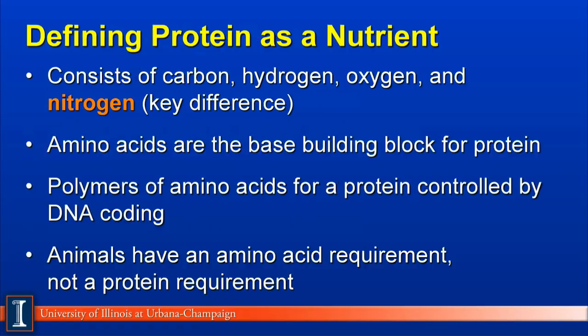Let's begin by defining what a protein is as a nutrient. It consists of carbon, hydrogen, oxygen, and nitrogen. Notice nitrogen is in very bold letters — nitrogen makes it different. Carbohydrates, fats, and oils also contain those same first three elements, but nitrogen makes the difference. And that's what makes it a protein or an amino acid.